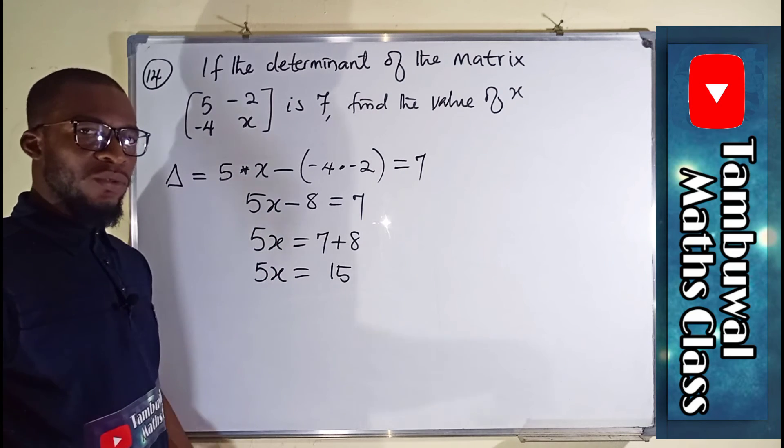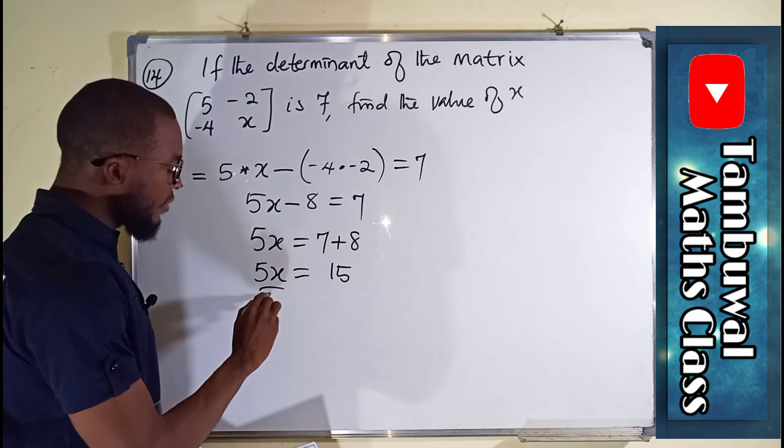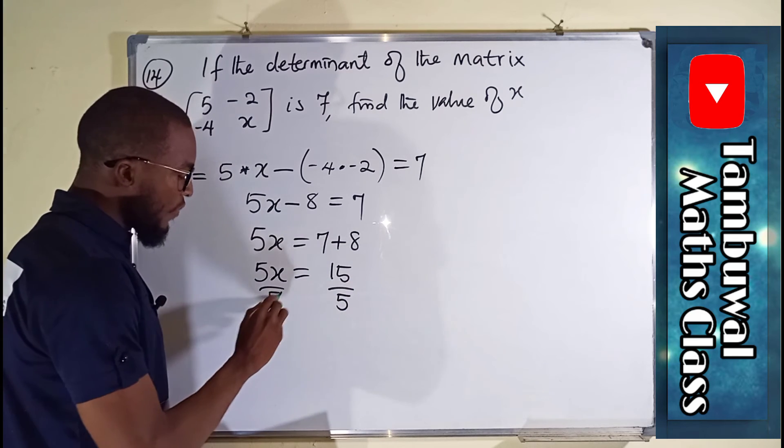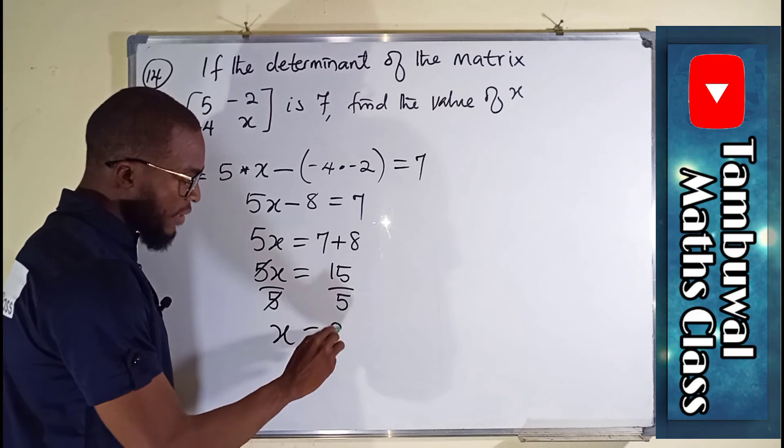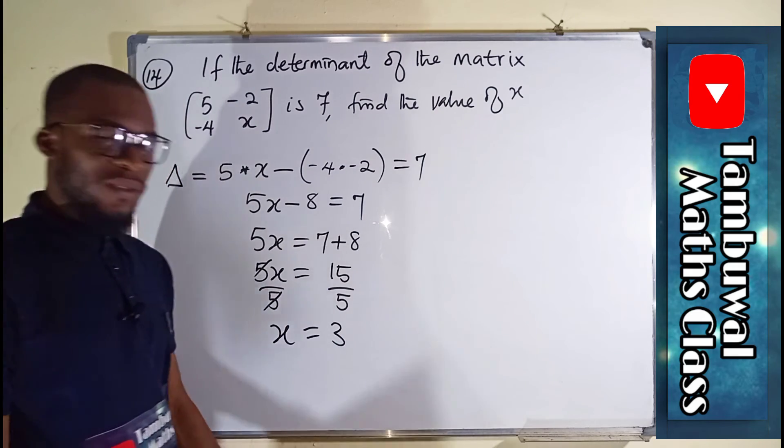We are looking for x so we can now divide both sides by 5. 5 will cancel 5. x finally equals 3 because 15 divided by 5 is equal to 3.